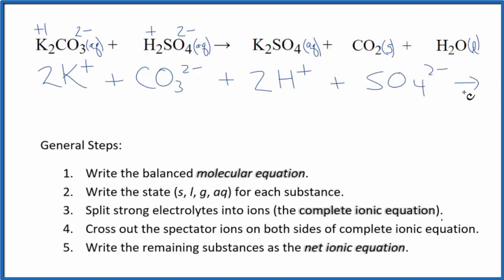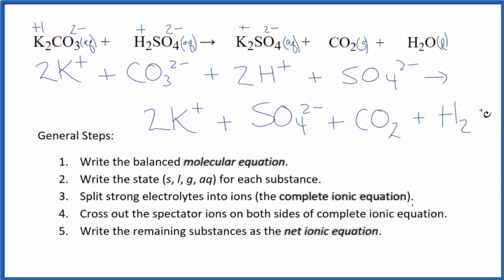And these are the states for the reactants in our net ionic equation. Products, we said plus 1, 2 minus, so we'll have, again, 2 potassium ions, 2K plus, plus we'll have the sulfate ion. And then for gases and liquids, we don't split those apart in net ionic equations, so just CO2 plus H2O.